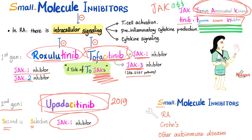The clinical uses of these small molecule inhibitors — including ruxolitinib, tofacitinib, and upadacitinib — include rheumatoid arthritis, Crohn's disease, and other autoimmune diseases.